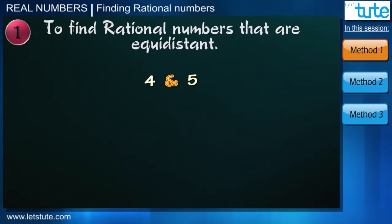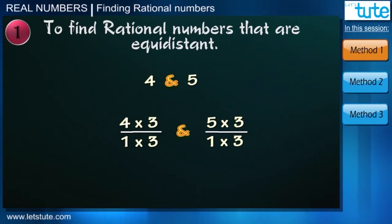In this trick, we first write 4 and 5 in the ratio form as 4 by 1 and 5 by 1. We have to find three rational numbers so we multiply the numerator and denominator by 3. So this will give us the fractions 12 by 3 and 15 by 3 which is a different way to represent 4 and 5.